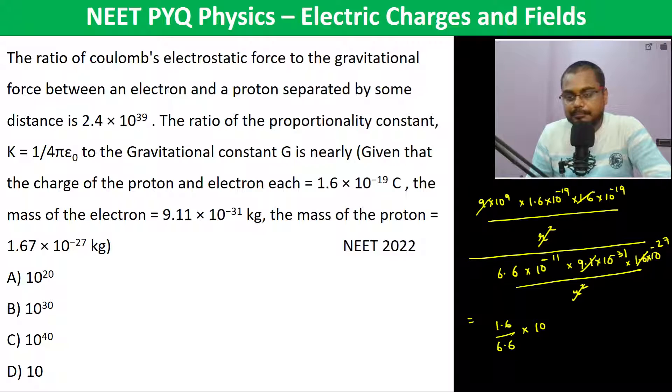Into 10 to the power - now here we have to do some calculations. It's -38 + 9 is -29, plus 11 plus 31 plus 27. So 31 + 27 is 58, 58 + 11 is 69, 69 - 29 is 40.